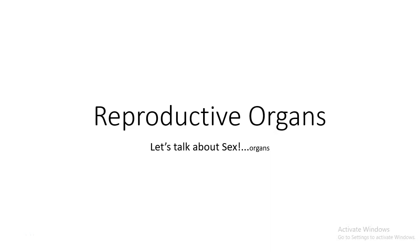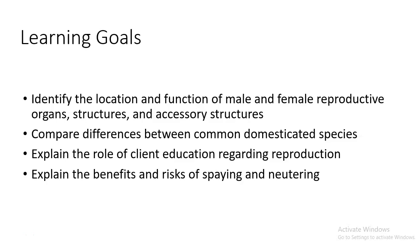Let's talk about reproductive organs and reproductive structures. Learning goals for today: identify the location and function of male and female reproductive organs, structures, and accessory structures; compare differences between common domesticated species; explain the role of client education regarding reproduction; and explain the benefits and risks of spaying and neutering.